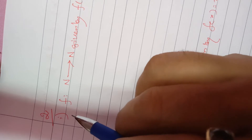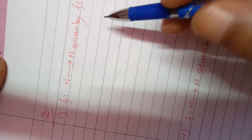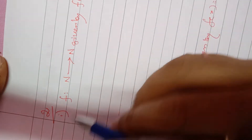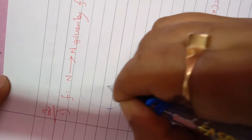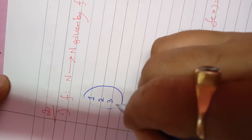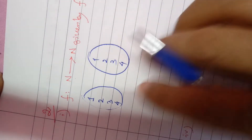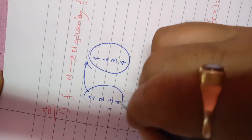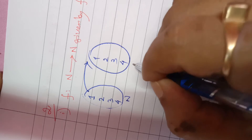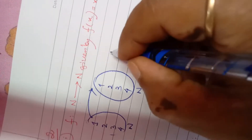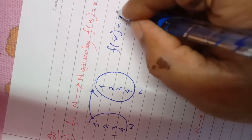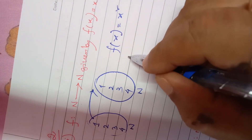Now we are taking question number two. We have to check the injectivity and surjectivity of the given functions. The first function is f: N→N, meaning from the set of natural numbers to natural numbers. Natural numbers start from 1, 2, 3 and so on. The function is given as f(x) = x².